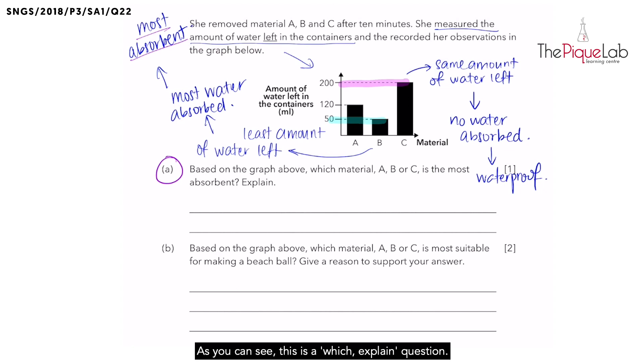As you can see, this is a which explain question. So we need to use our answering technique called CUE. What does CUE stand for? Choose, use data, and explain. So now we have chosen B as our answer. The next step that we need to do is to use the data.